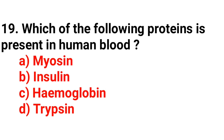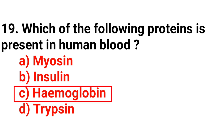Question number nineteen: Which of the following proteins is present in human blood? The answer is option C, hemoglobin.